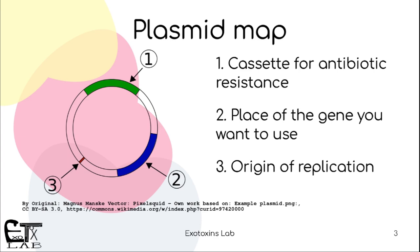Usually a plasmid will have a cassette for antibiotic resistance, then it will have a place for the gene that you want to use, create, or express in the bacteria or the eukaryotic cells, and usually it has an origin of replication. That is a schematic way to see how a plasmid looks like, and then you get an idea of whether you can use it in the future.